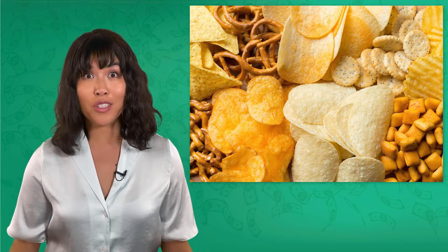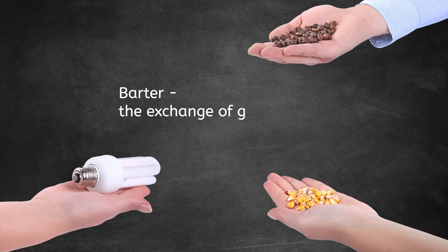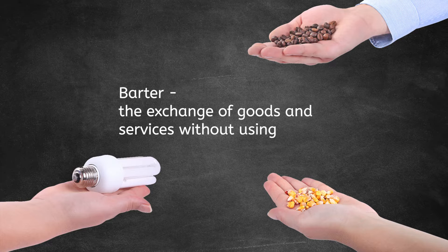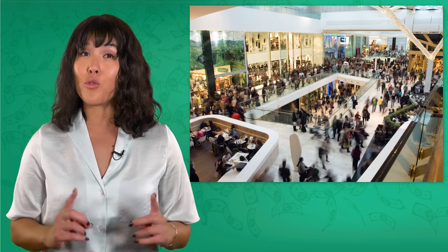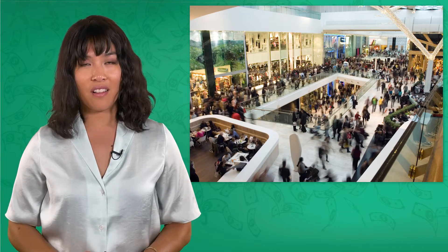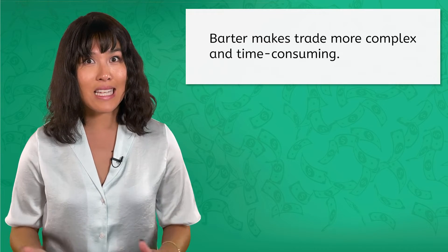In our snack scenario, people would have bartered as a way to get the snack they wanted. Barter is the exchange of goods and services without using money. Bartering might work well when you want to trade snacks — it even works in small towns or places that are harder to access. But what happens if you try it on a large scale? Well, it makes trade more complex and time-consuming.